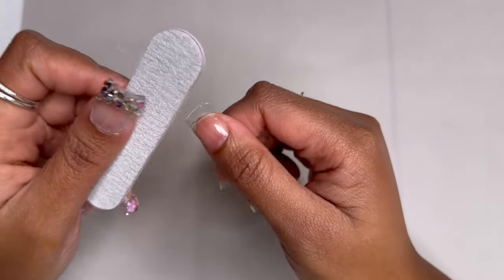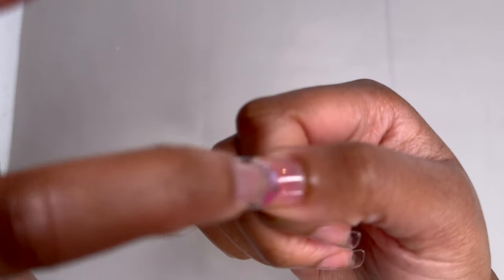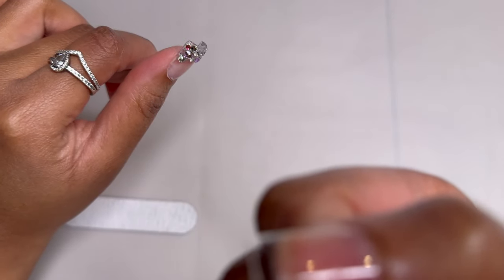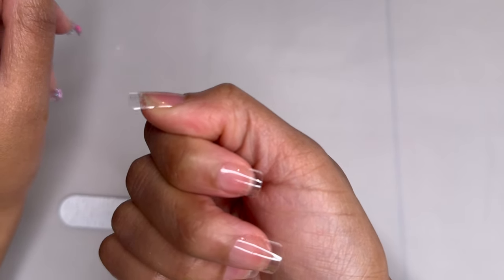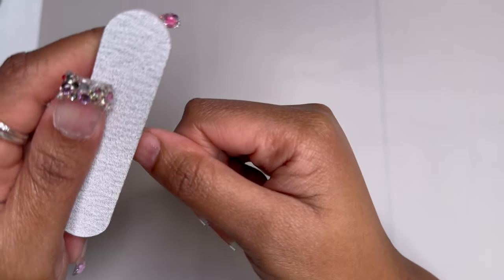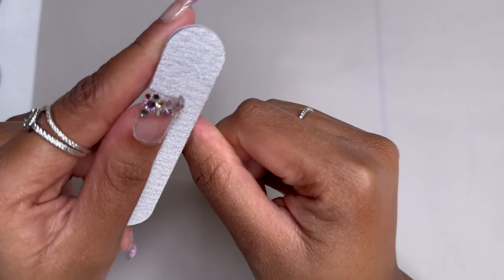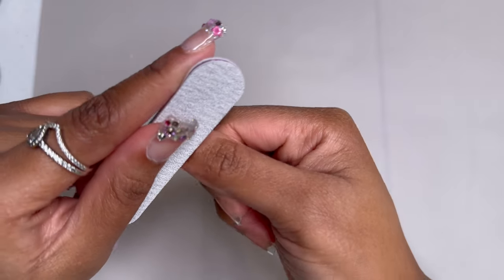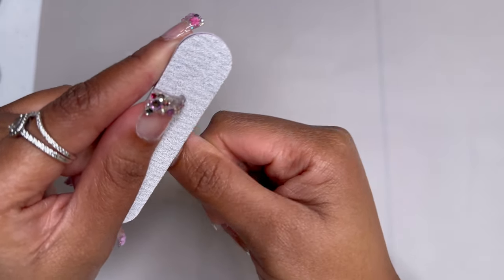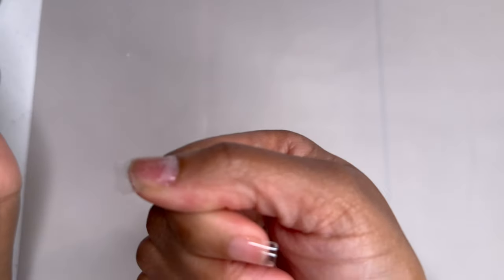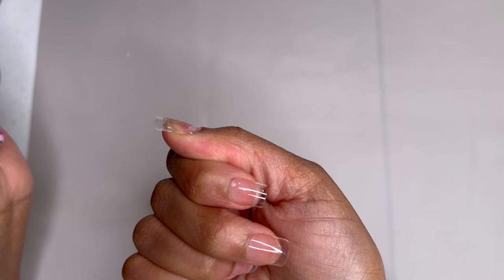Usually for this step we will be using the e-file but we are using no tools for this set. So we're just going to go in with a regular file which honestly I kind of like this better because I feel like you have more control. You also don't have to worry about nipping your cuticle or the speed of your e-file, just none of those other things.